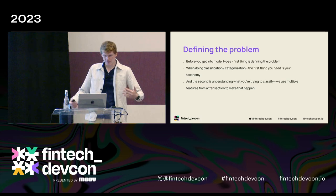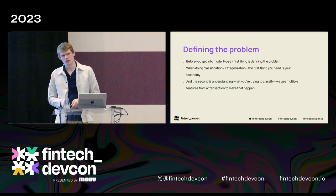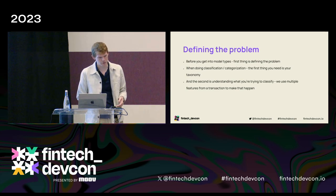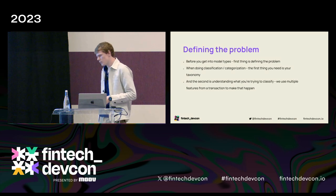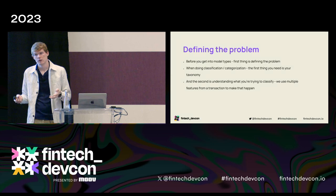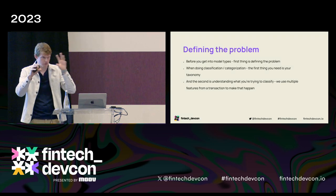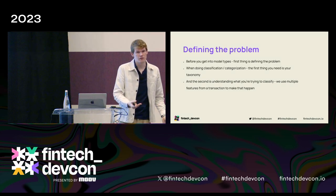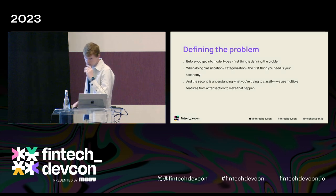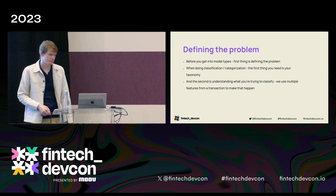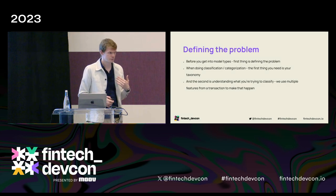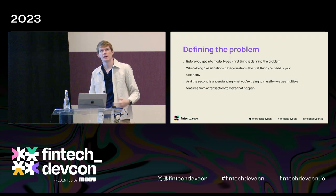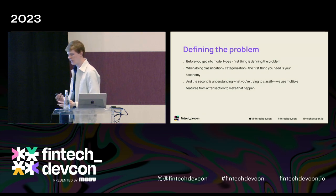Once you've got your taxonomy, the second thing to think about is what pieces of information you have about the thing you're trying to classify. In this instance, it's a financial transaction. We have the transaction description — which contains lots of varying pieces of information — but also other things like the amount, whether it was a credit or debit transfer, incoming or outgoing, and so on. You've got to understand what those features are. In this instance they'll be enums, numbers, or strings. If you're doing something more multimodal, you could have images.